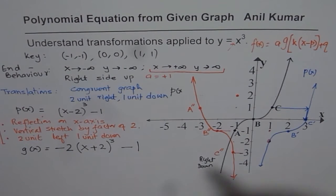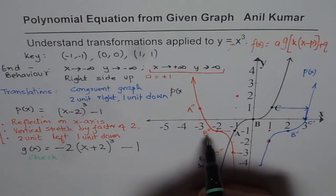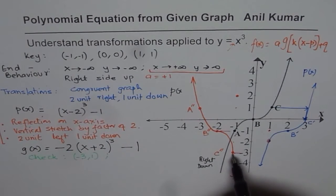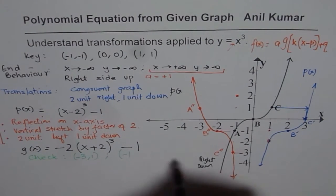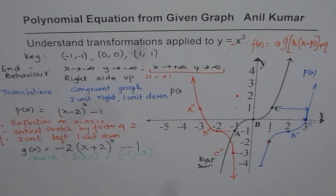You could always check your result. Use these key points to verify. For example, substitute x equals minus 3 and check if you get y equals 1. You could also substitute x equals minus 1 and see if you get minus 3 as the y value. This will ensure the equation you got from the graph is correct. I hope with this example you should be in a position to write equations for polynomials from a given graph, especially for cubic functions. I am Anil Kumar — please subscribe, feel free to write comments, and share. All the best.